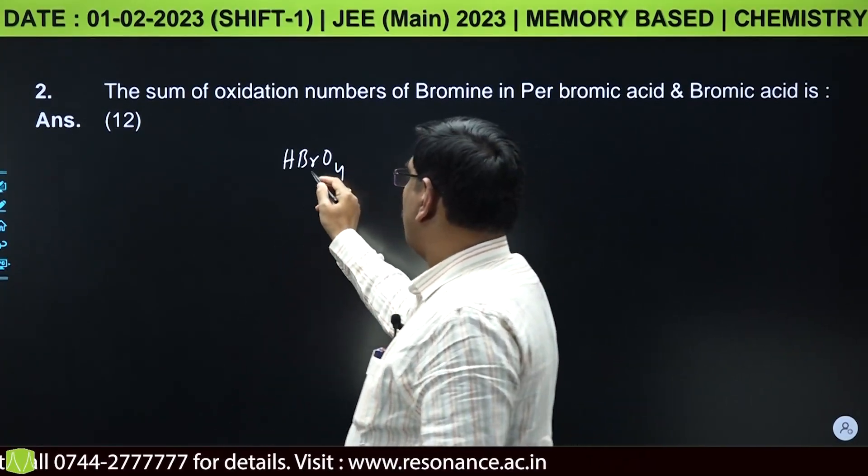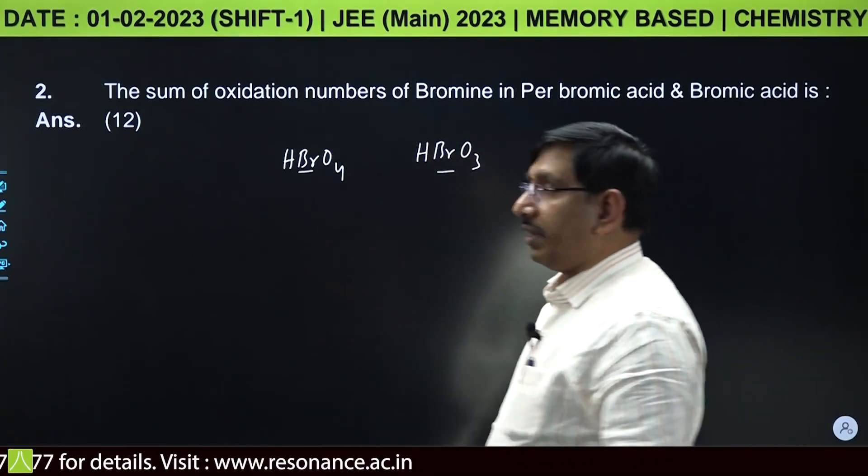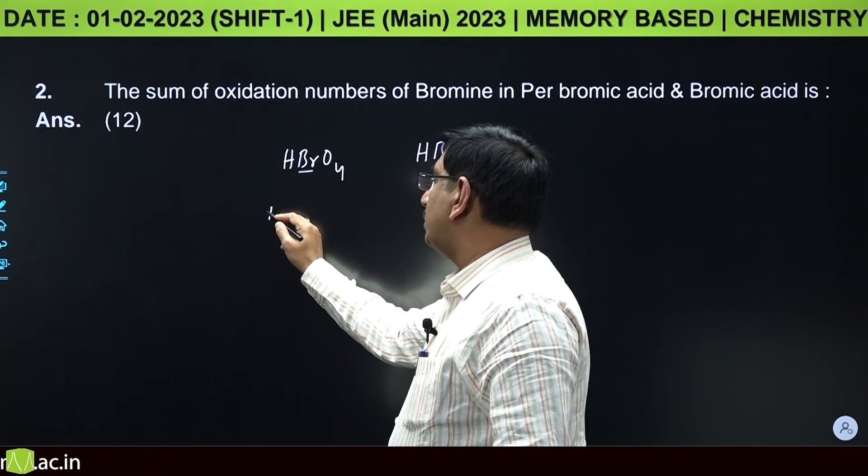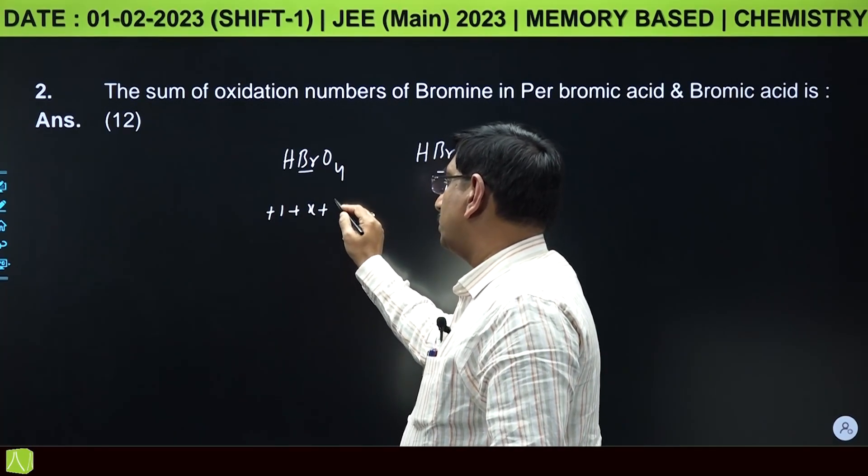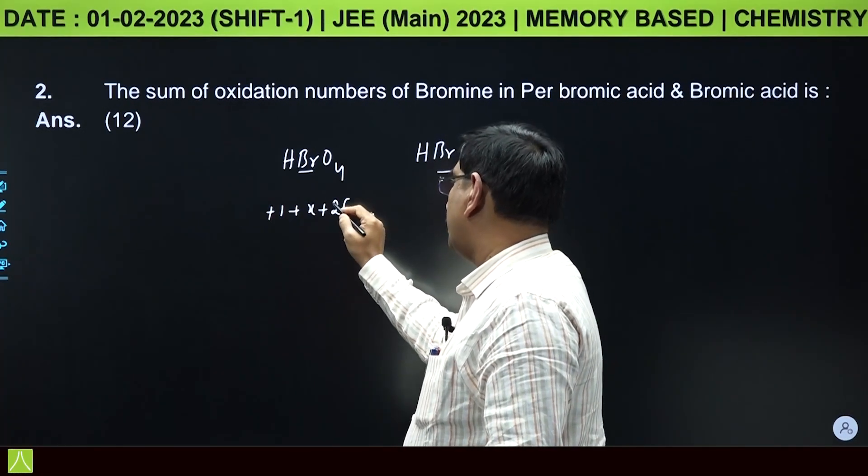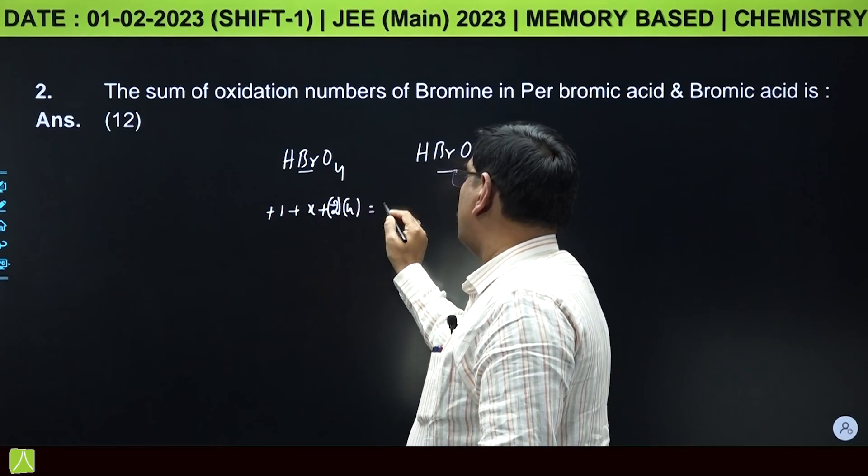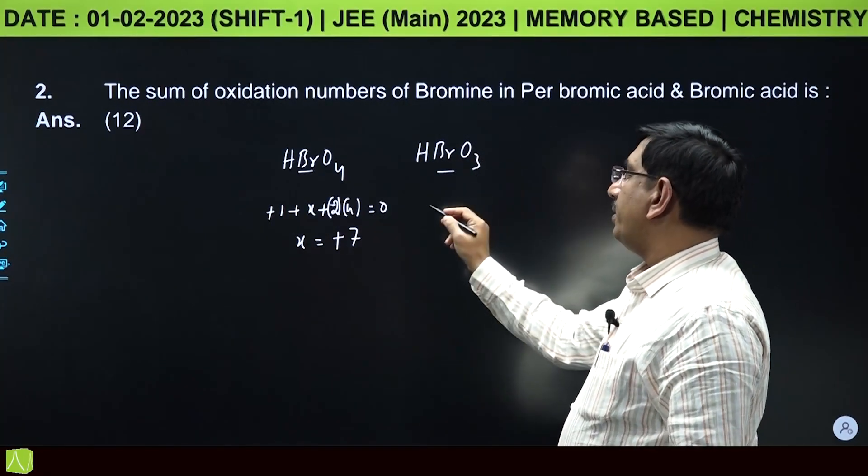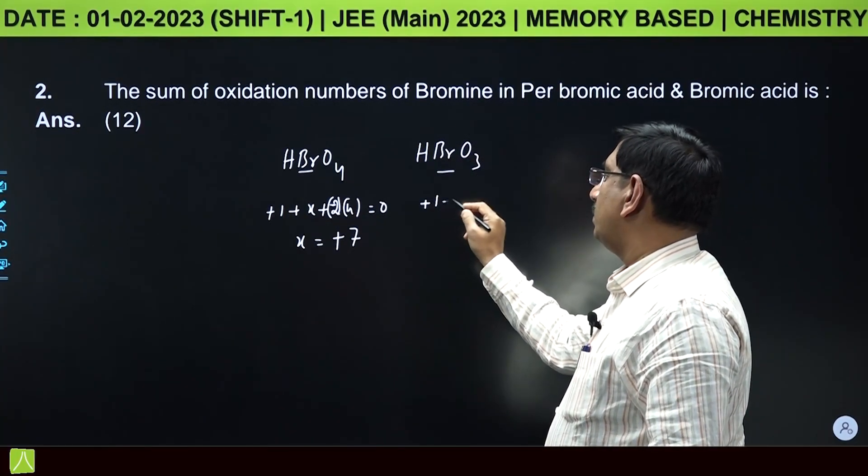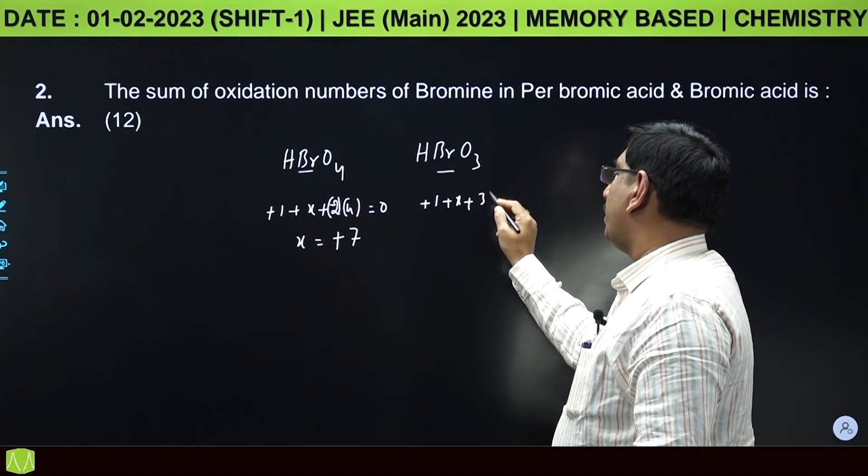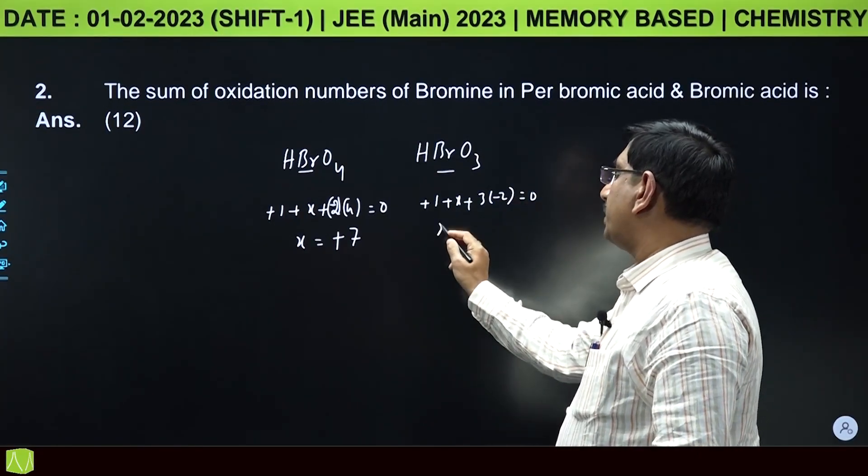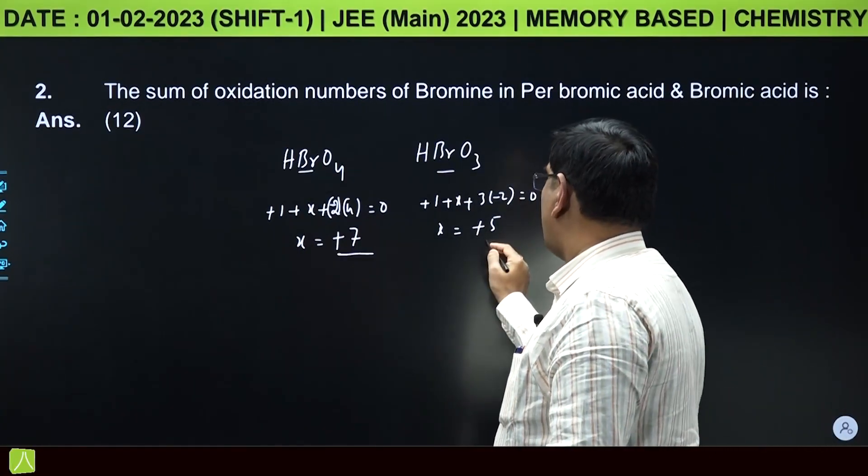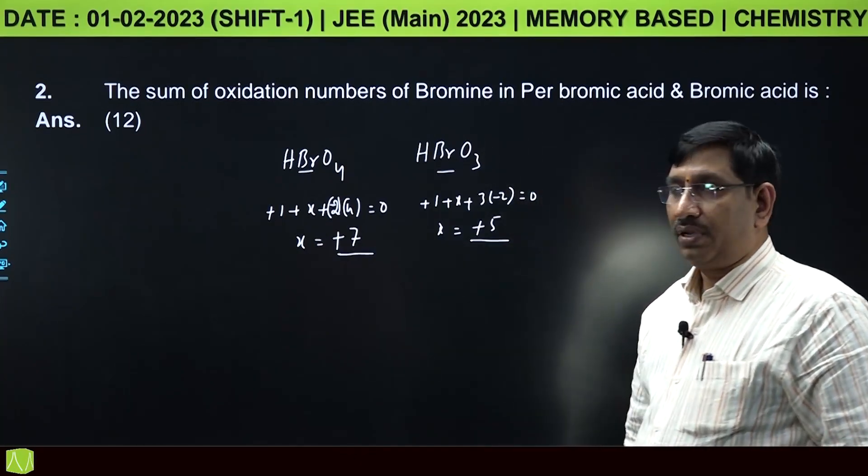In perbromic acid, bromine oxidation number: +1 + x + 4(-2) = 0, so x = +7. In bromic acid: +1 + x + 3(-2) = 0, so x = +5. Total oxidation numbers: 7 + 5 = 12.